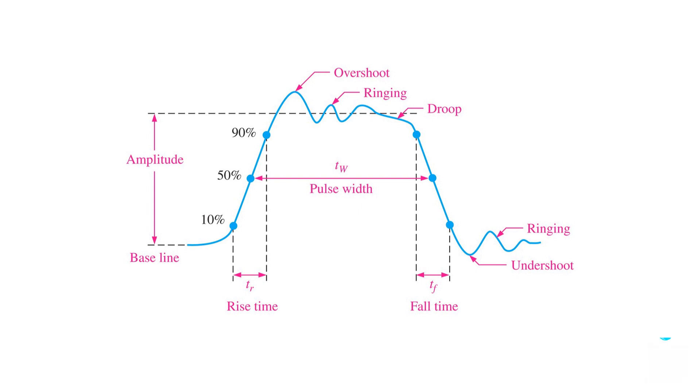So the time required for the pulse to go from low to high is the rise time, and the time required for the pulse to go from high to low is the fall time. The rise and fall times are calculated using the time between 10% and 90% of the amplitude.